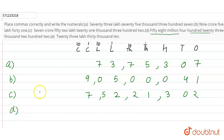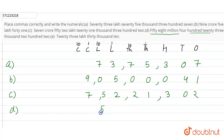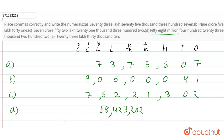Part D: 58,423,202. This is written in the international system, and we place commas according to the international system of numerals. So 58,423,202 — in the international system we place commas after every three digits.